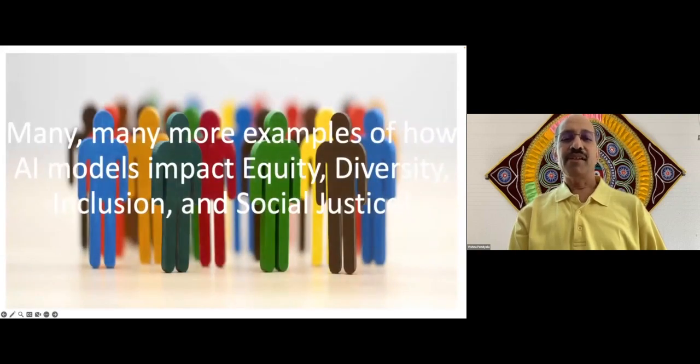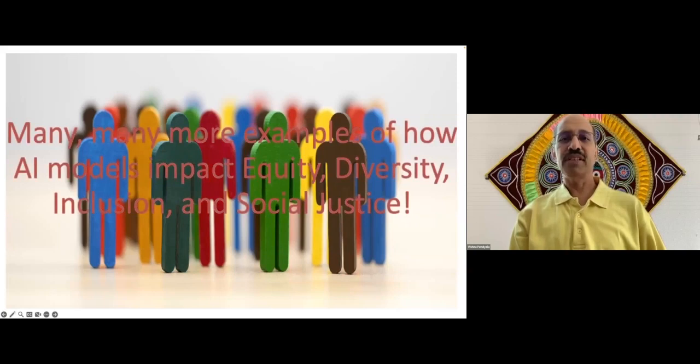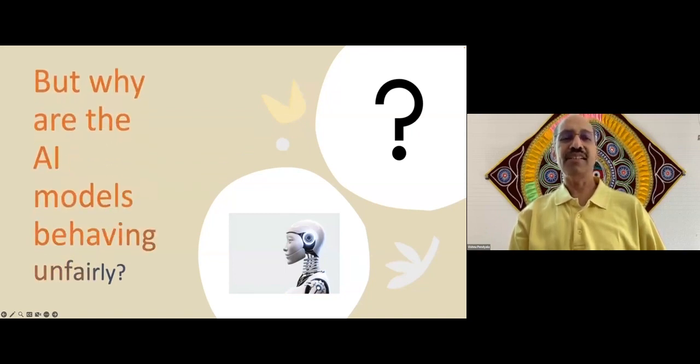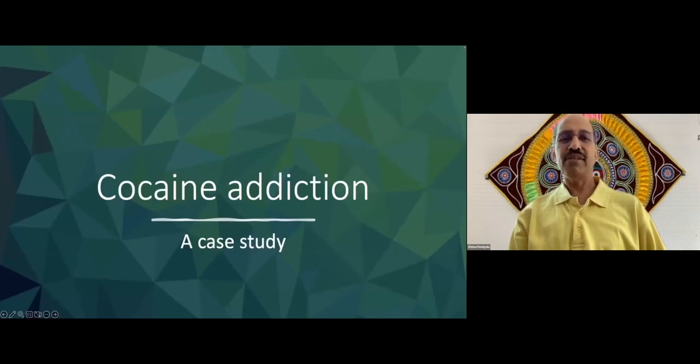So there are many, many more examples of how AI models impact equity, diversity, inclusion, and social justice. Some of them are in some other videos that I gave presentations. You can watch them if you are interested. But why are the AI models behaving unfairly? So that is the question. That's a big question.